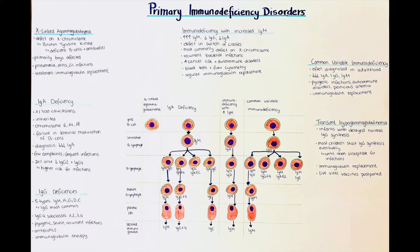The next primary immunodeficiency we will talk about is IgA deficiency. This is a relatively common primary immunodeficiency disorder within the Caucasian population — as many as 1 in 700 individuals might have this defect. The disease is inherited and it's associated with defects on chromosomes 18, 14, and 6.